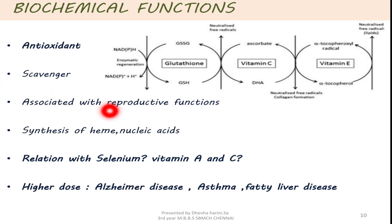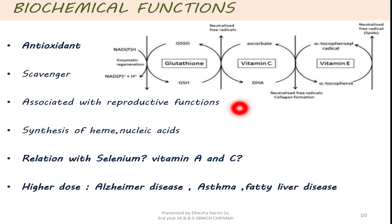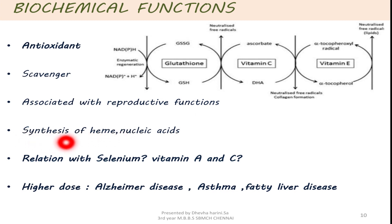Vitamin E preserves and maintains the germinal epithelium of gonads, which is required for the proper reproductive function. Its importance in other organs: in muscles it is important for the proper storage of creatine; in the intestine it is needed for optimal absorption of amino acids; in the liver it is protected from being damaged by toxic compounds such as carbon tetrachloride; in cells it is required for cellular respiration through the electron transport chain. It increases the synthesis of heme by enhancing the enzyme delta-aminolevulinic acid synthase and aminolevulinic acid dehydratase. It is also involved in synthesizing nucleic acids.